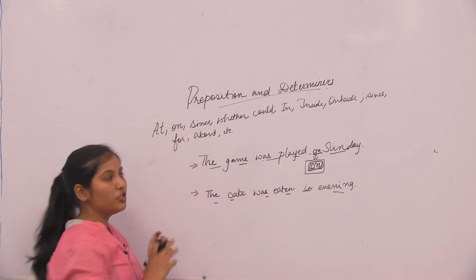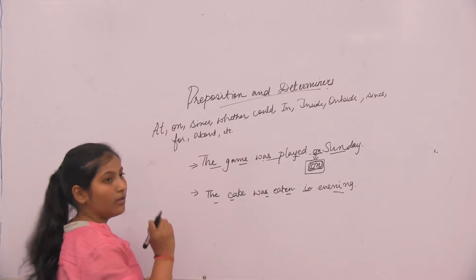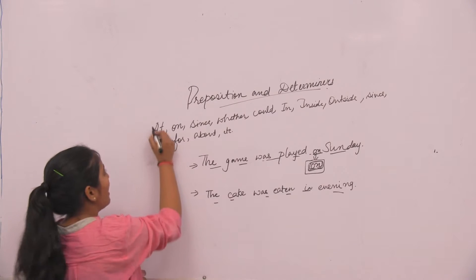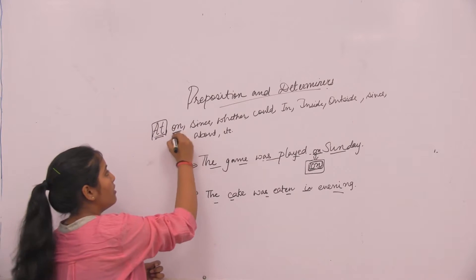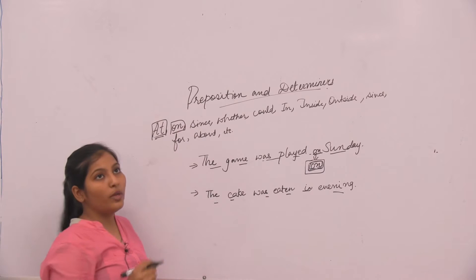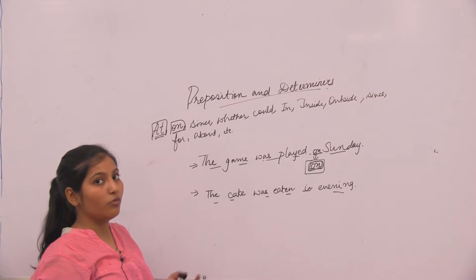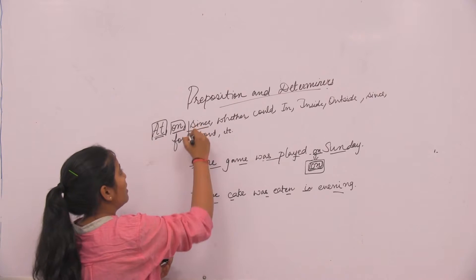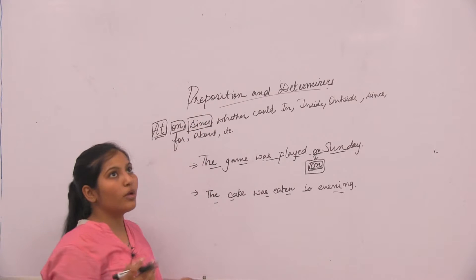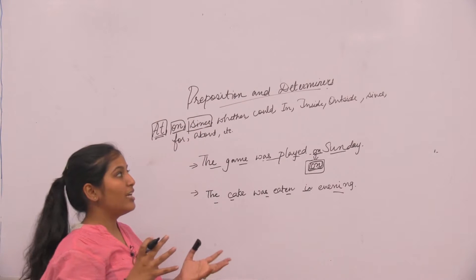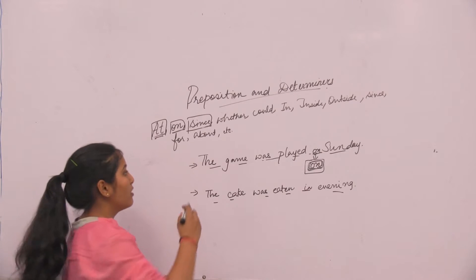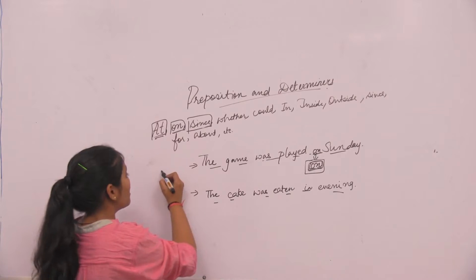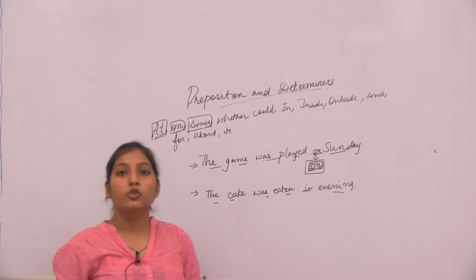Every preposition has its respective uses. For example, at is used with the time of the day. On is used with days of the weeks. Since is used when we want to express the time of year, months, year, months, and etc.